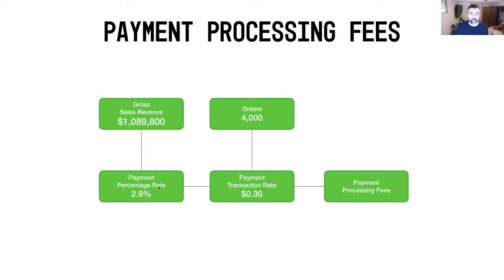There are two different rates that make up your payment processing fees. You've got your payment percentage rate, which is typically 2.9% as most people talk about — you can obviously get that down a bit further, and we'll talk more about how that impacts the bottom line. Then you've also got a payment transaction rate, charged on a per-order basis. It's usually $0.30, sometimes a little higher or lower, but typically around that $0.30 mark regardless of your payment percentage rate. You add those two together to get your total payment processing fees.